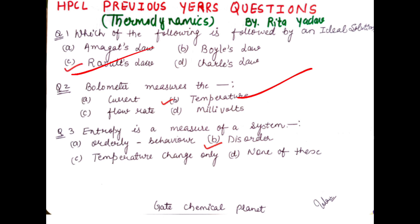Now we move to the third question: entropy is a measure of — (a) orderly behavior, (b) disordered behavior, (c) temperature changes only, (d) none of these. Entropy is a measure of disorder of a system, so option B is correct.